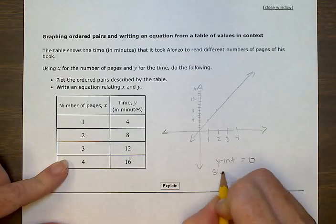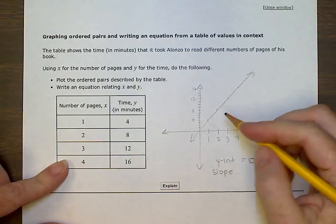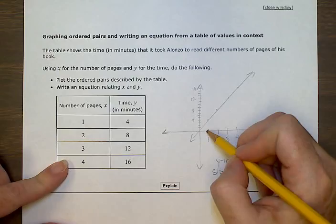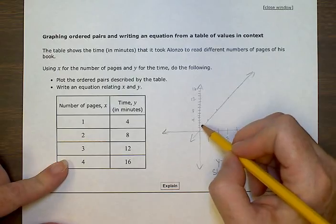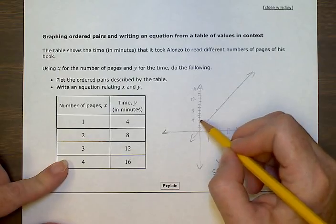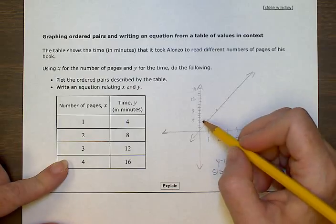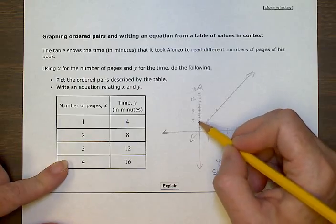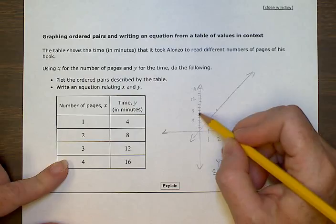And then the slope—for every minute he read 4 pages, I mean for every page it's taking 4 minutes. So every time it was going up by 4, it went from 4 to 8 to 12 to 16.